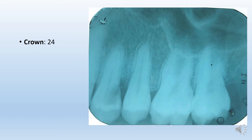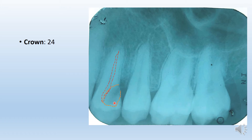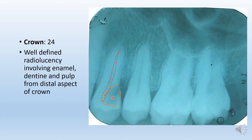We have identified that our tooth of interest is 2.4. Because we can see a radiolucency in the crown. This radiolucency, if you observe closely, is arising from the distal part of the crown and is extending to involve the enamel as well as the dentine. Moving on, you will see that it is actually involving the pulp of the tooth. This radiolucency most likely looks like dental caries, involving the pulp of the tooth — a well-defined radiolucency involving enamel, dentine, and the pulp.